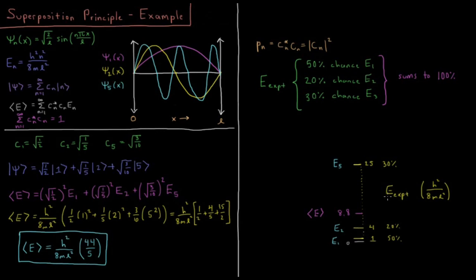Looking at a diagram with units of h²/8mL²: E₁ is at 1 with a 50% chance of being measured, E₂ is at 4 with a 20% chance, and E₅ is at 25 with a 30% chance. The most likely measurement is E₁, giving a kind of two-thirds/one-third pull toward the lower energies. So the average value ⟨E⟩ comes out to 8.8 (in those units), which is exactly where you'd expect it to fall based on these individual values and their respective probabilities.